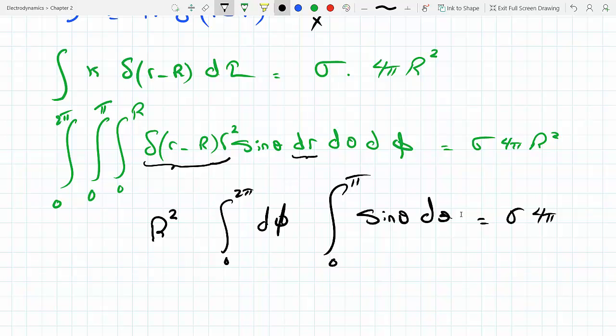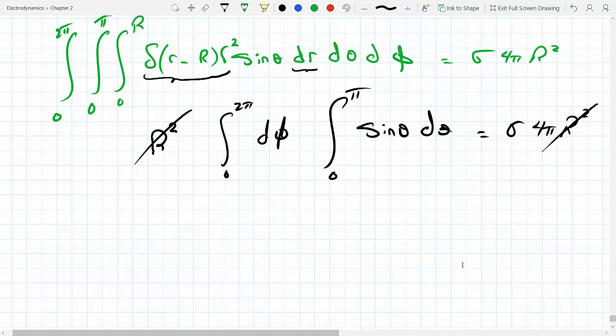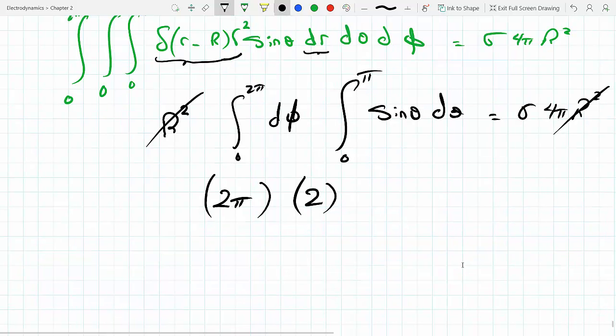Now notice that R² crosses out with R². And integral of dφ from 0 to 2π will just be 2π. Sine theta from 0 to π will just be 2. That's how you get the solid angle on a sphere to be 4π. Oh, we forgot the K, what we're trying to find here.